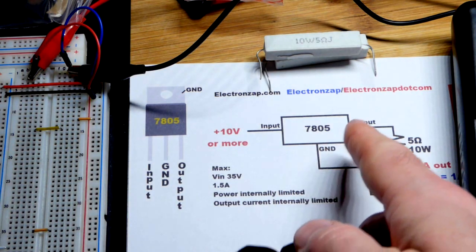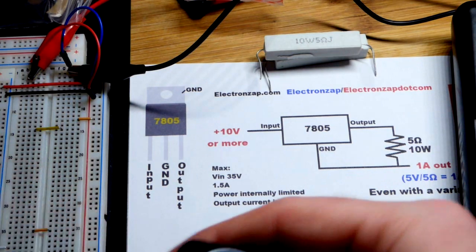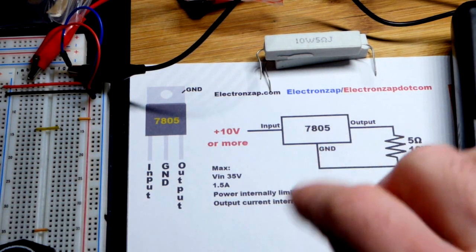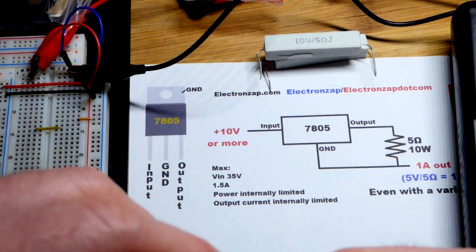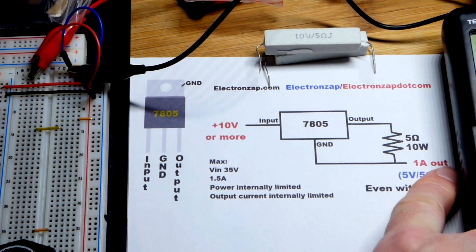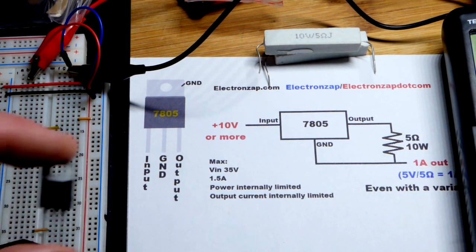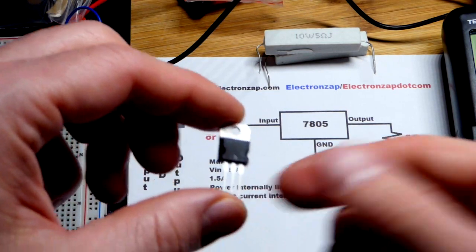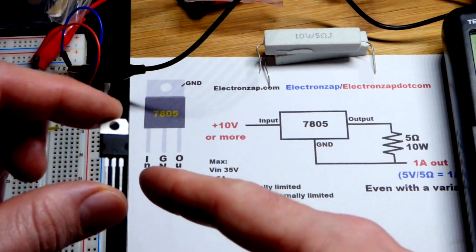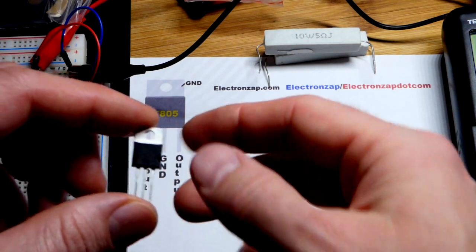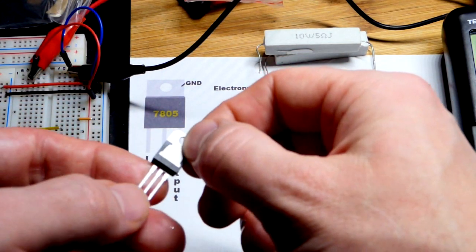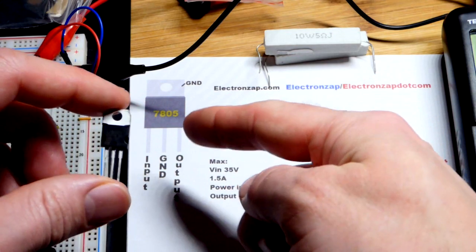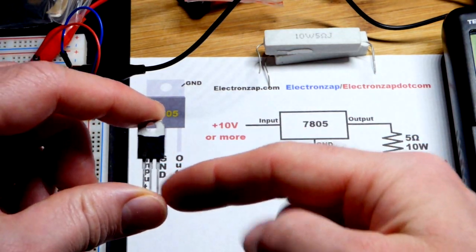So L7805CV and the main thing though is it's a 7805. The 05 means it outputs 5 volts but we're not going to use it as a 5 volt supply. We're going to use this where we get one amp of current even with a varying load as long as we have enough voltage coming in.